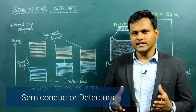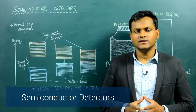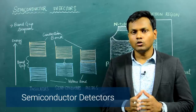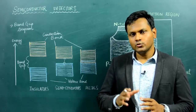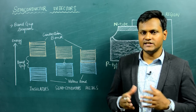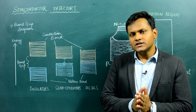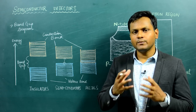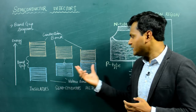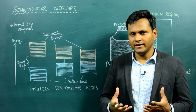These are solid state detectors that can detect nuclear particles like alpha particles and gamma radiation, but they are made out of semiconductor material. Before I talk about the principle and working mechanism of this kind of detector, first let's talk about what is a semiconductor. A semiconductor is a material that we can distinguish from insulators and conductors by saying that they have an intermediate band gap.